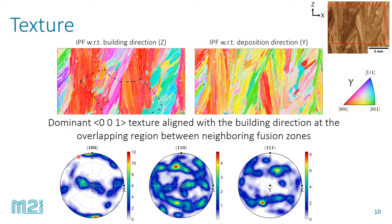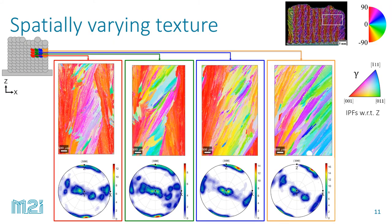The next question is whether the texture also varies as we go towards the edges of the part. To study this, we performed several EBSD scans from the bulk all the way to the edge. Indeed we see the periodic repeatability of the overlapping regions with the strong ⟨100⟩ direction. But as we went towards the edge, we saw the rotation of this ⟨100⟩ direction towards the edges of the part. So we do have spatially varying grain growth direction, grain size, and spatially varying texture, which could result in anisotropic mechanical properties.